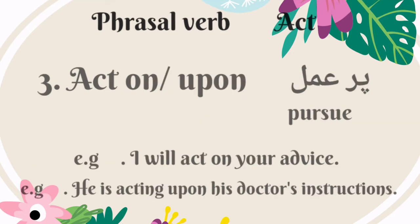The third phrasal verb is 'act on' or 'act upon.' Its meaning is to pursue — Urdu mein is ka matlab hai par amal karna. For example: I will act on your advice. He is acting upon his doctor's instructions.